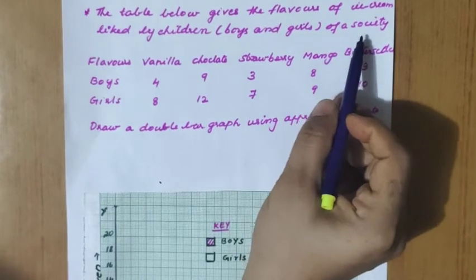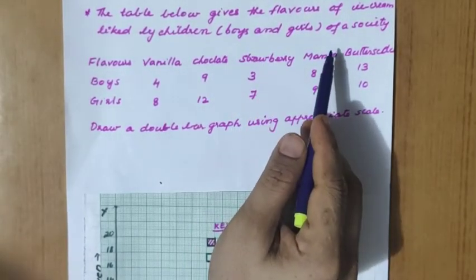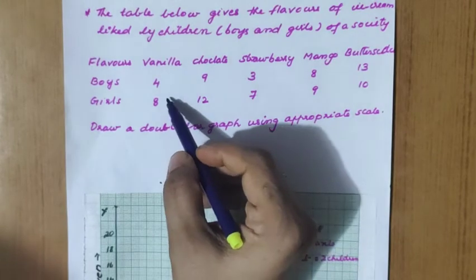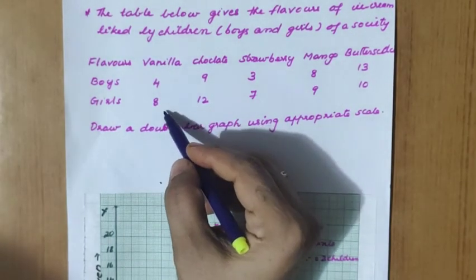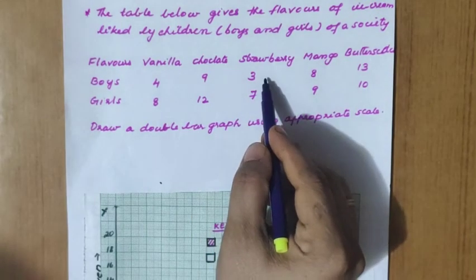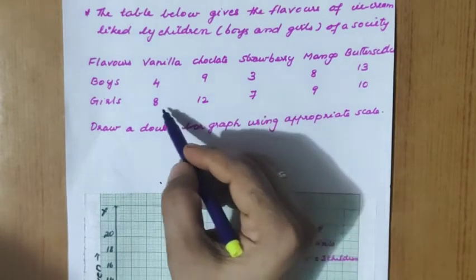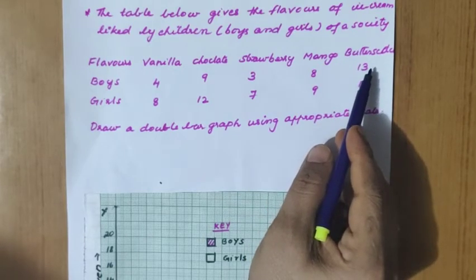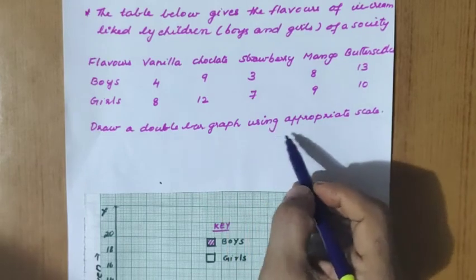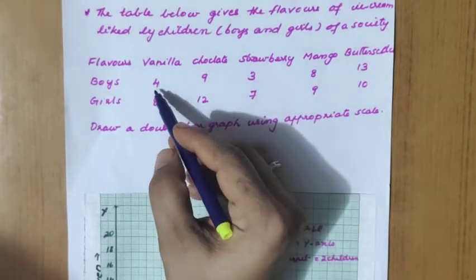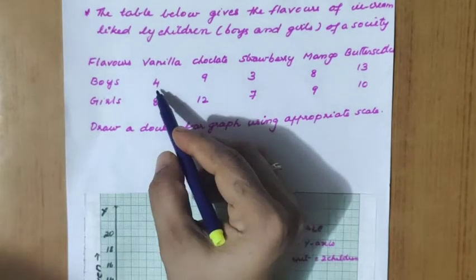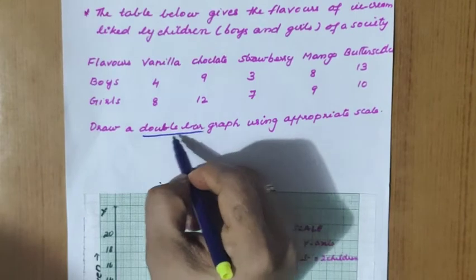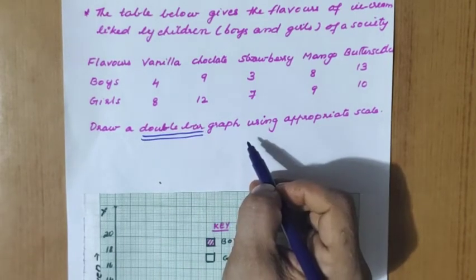The next question gives a table of ice cream flavors liked by boys and girls. Vanilla: boys 4, girls 8. Chocolate: boys 9, girls 12. Strawberry: boys 3, girls 7. Mango: boys 8, girls 9. Butterscotch: boys 13, girls 10. Since there are two categories - boys and girls - a double bar graph should be drawn.